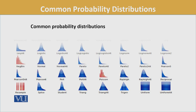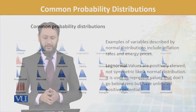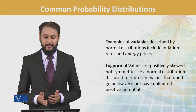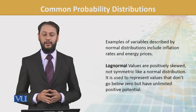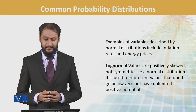Log normal — ab isko hum table mein dekhte hain. You can find log normal in the table and see its graph there. Iski jo theme hai — it is positively skewed, not symmetric. Dono sides barabar nahin hain, yeh normal distribution nahin hai.